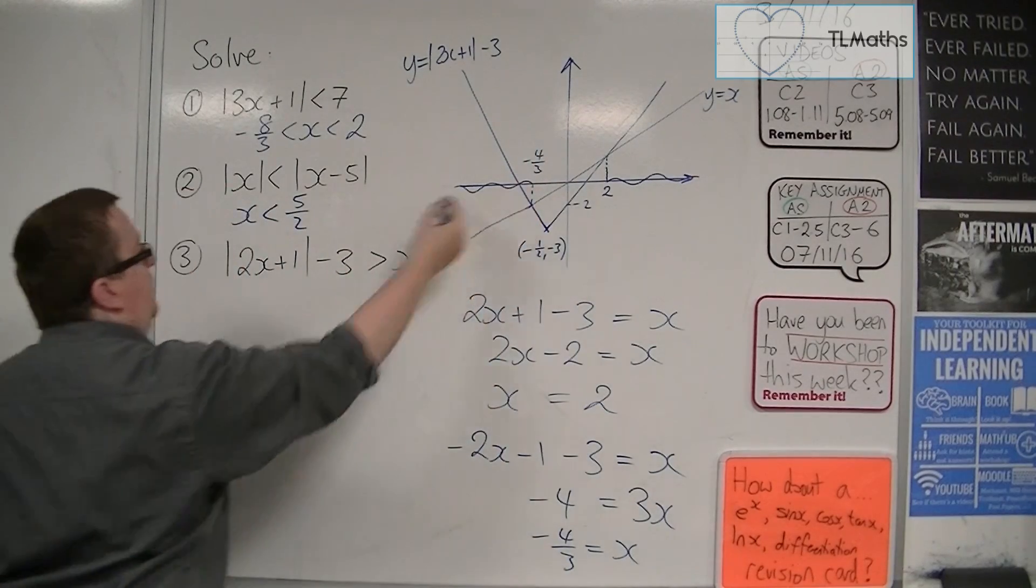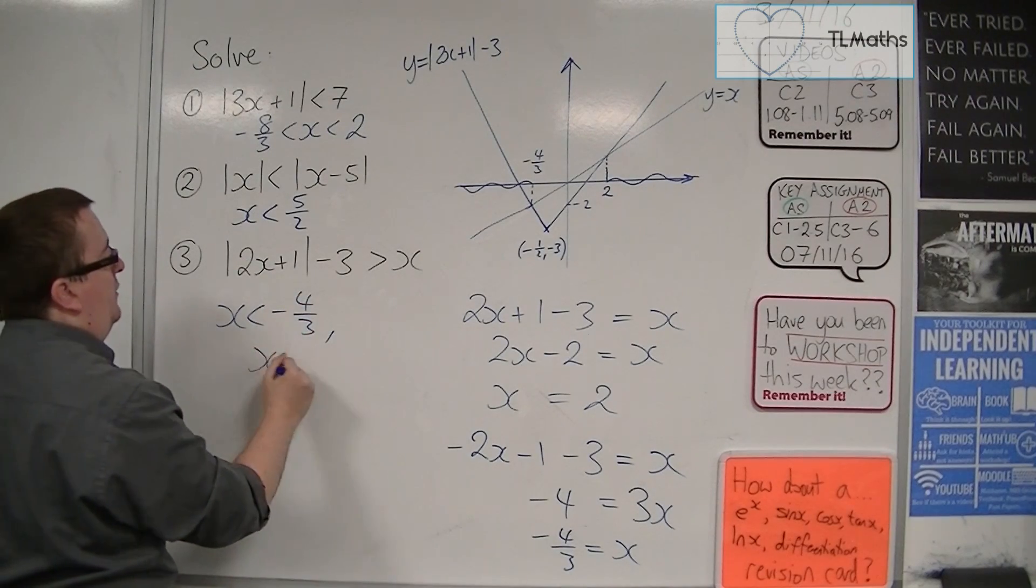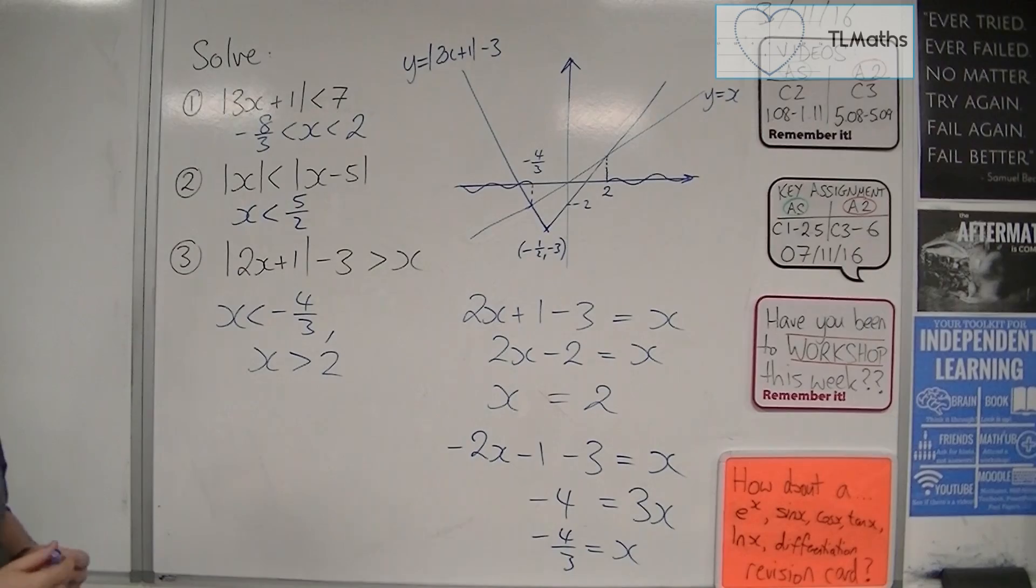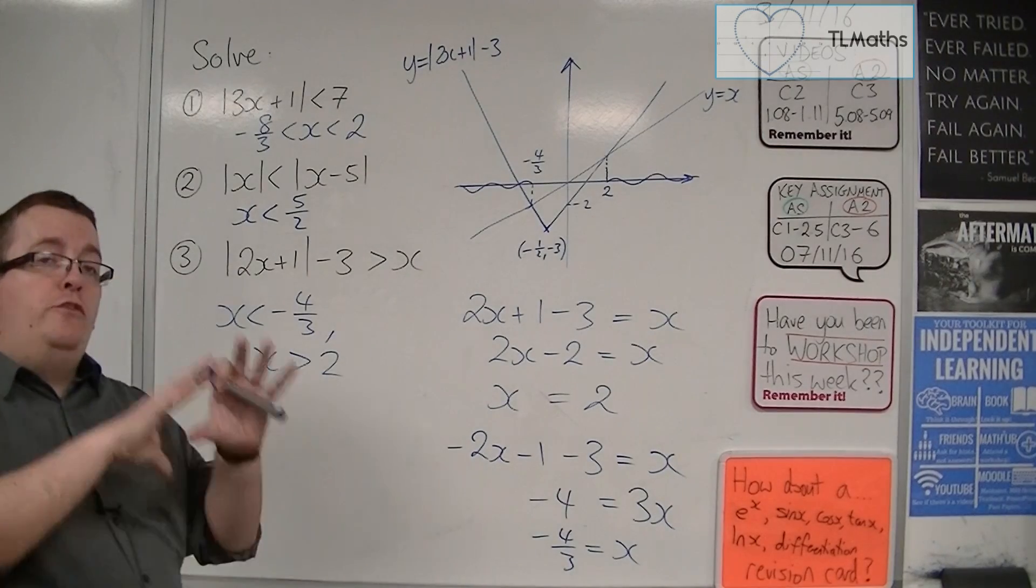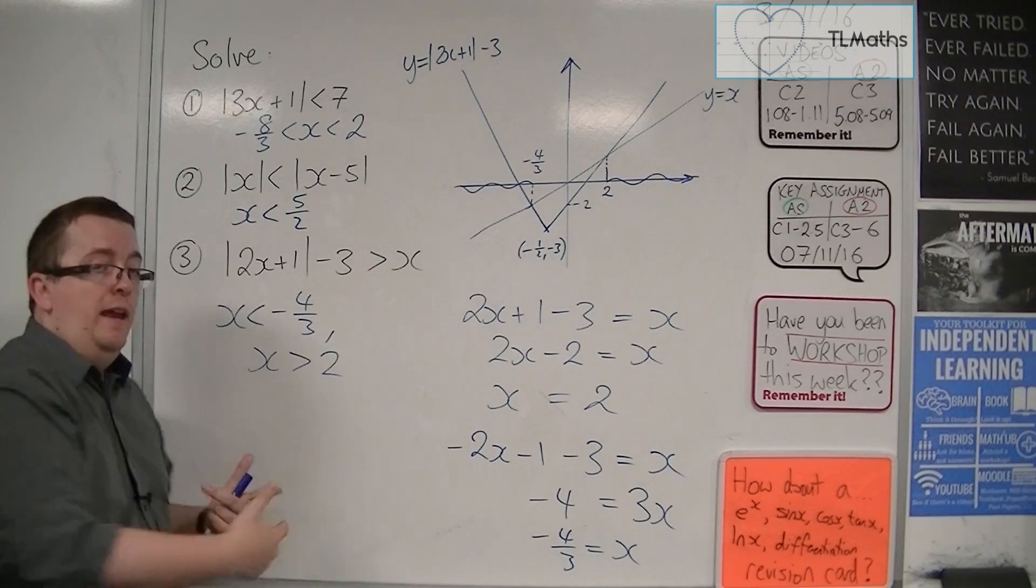So the two regions are x is less than minus 4 thirds and x is greater than 2. So much in the same way as you would have done quadratic inequalities, if you've got two distinct regions, you must have two distinct inequalities.